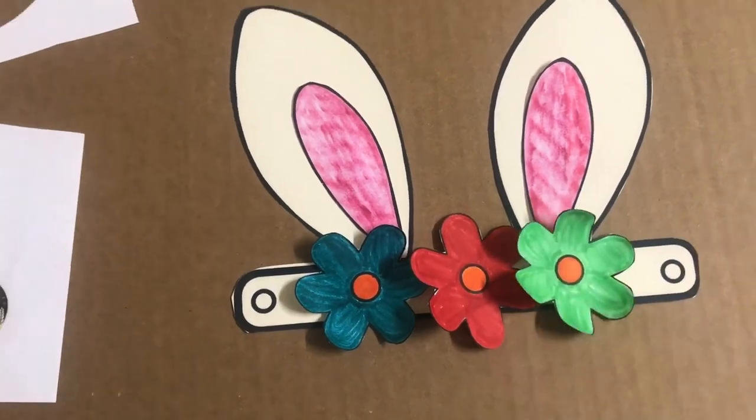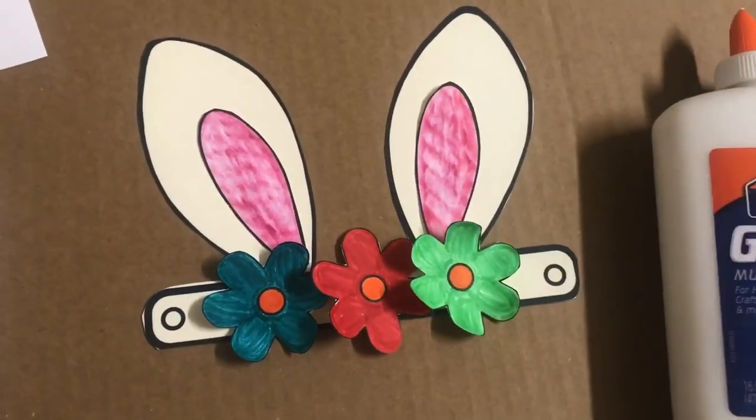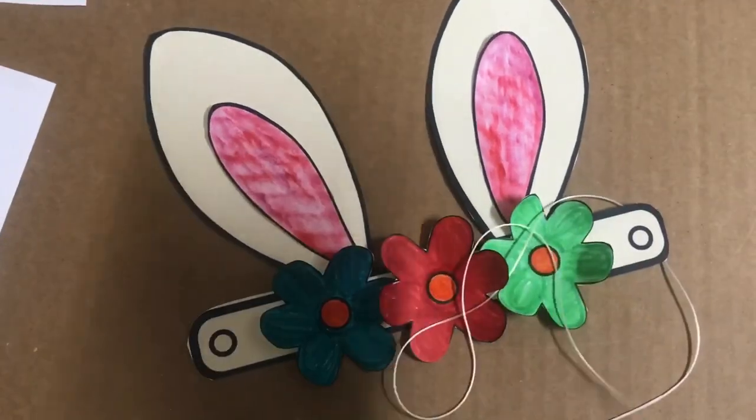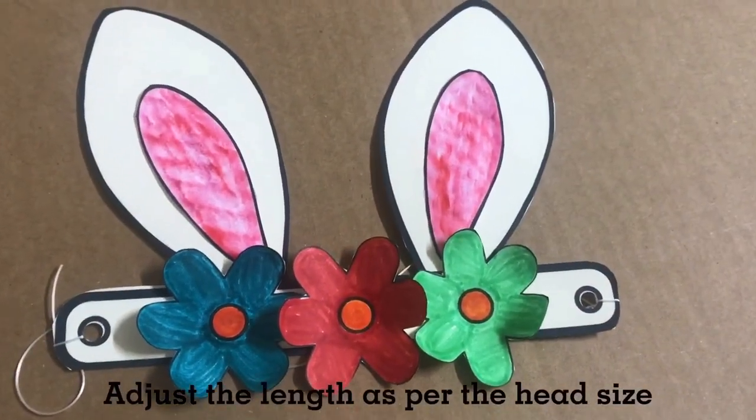Glue the inner ears and the flowers as shown. Using the hole punch, punch the edges to insert the elastic. Tie the elastic on both edges.